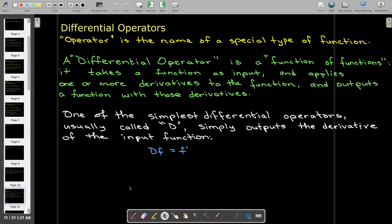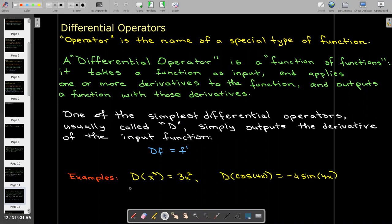The simplest differential operator is just capital D, which just means take the first derivative or take one derivative of the input function. So the input function is a function, and the output is a function as well. D of cosine of 4x would be the derivative of cosine of 4x, which is negative 4 sine of 4x.